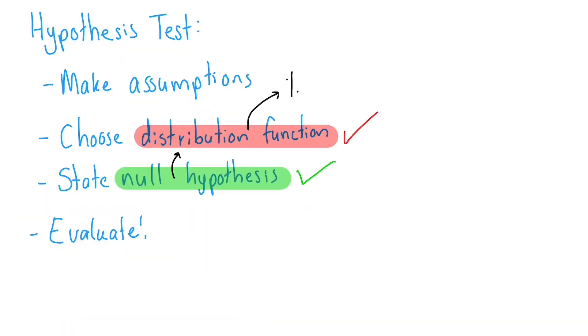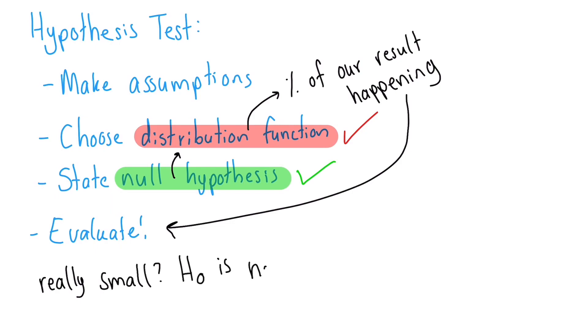The hypothesis test works by assuming the null hypothesis is true and then calculating the likelihood of getting our situation in that scenario. If the likelihood is really small, then we can reject the null hypothesis and assume that something else must be the case.